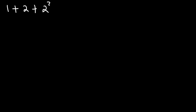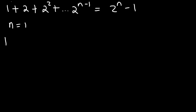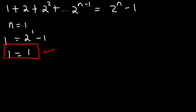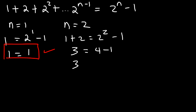Here's another one. Let's say if we have 1 plus 2 plus 2 squared, and then 2 to the n minus 1, is equal to 2 raised to the n minus 1. Let's test it out with a few numbers. When n is 1, the first term is 1, and on the right side, 2 to the first power minus 1 is 2 minus 1, which is 1. So it's true for n equals 1. For n equals 2, we need the first two terms: 1 plus 2. And replacing n with 2: 1 plus 2 is 3, 2 squared is 4, and 4 minus 1 is 3. So it's true for the second term.